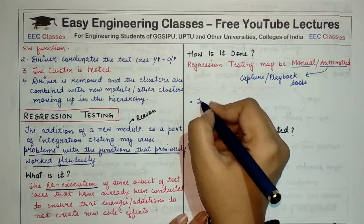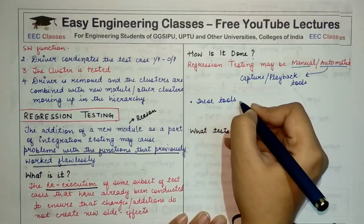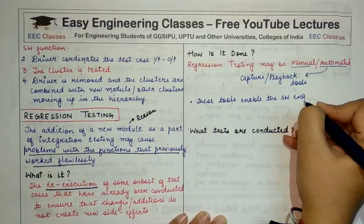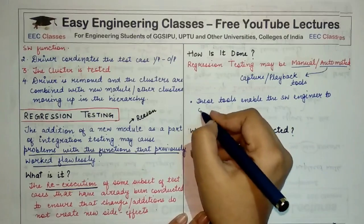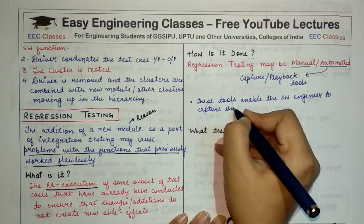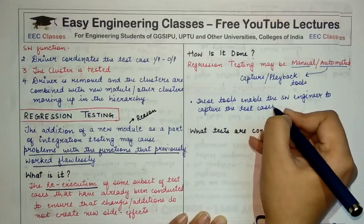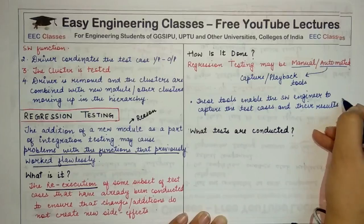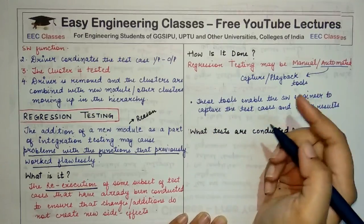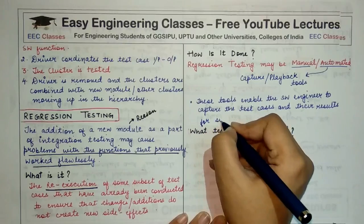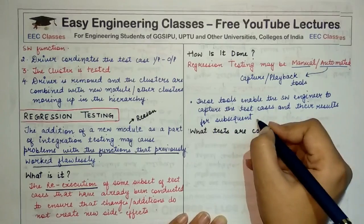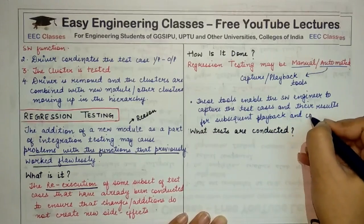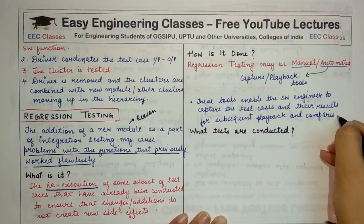These tools enable the software engineer to capture the test cases — what test cases were previously executed — and the results of these test cases, so as to play back for subsequent evaluation. That is, when we run these tests again during regression testing, we compare: what result was coming when originally the tests were run, and what result is coming now.